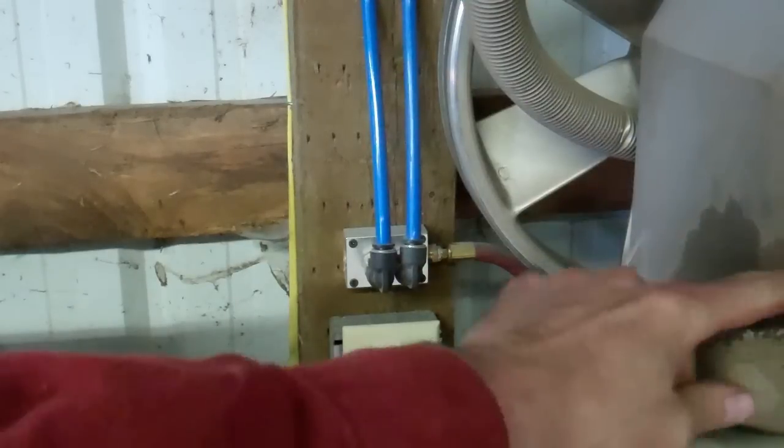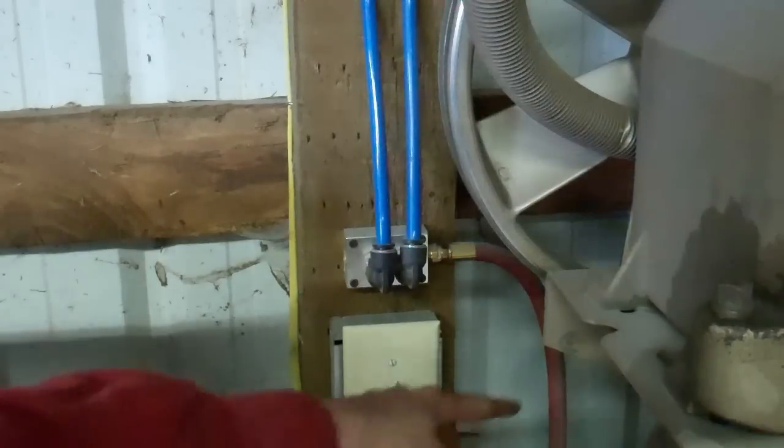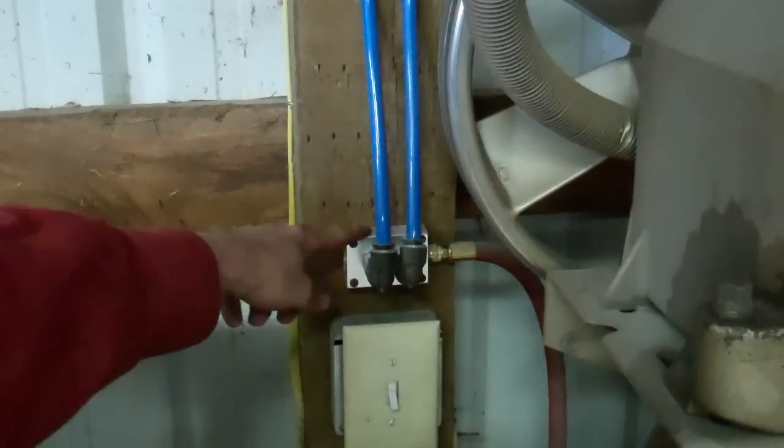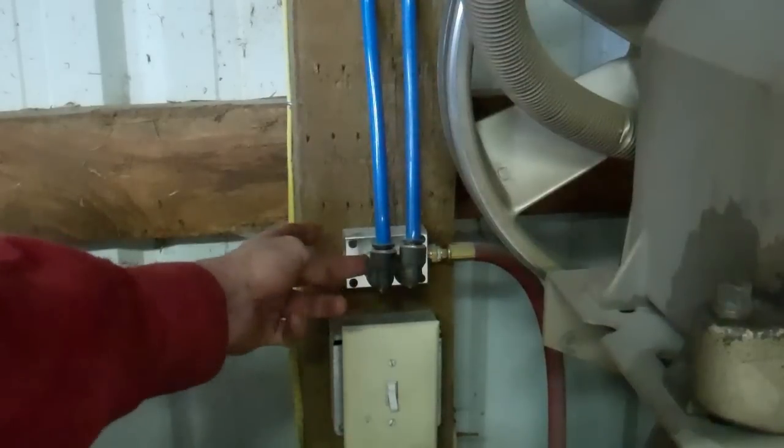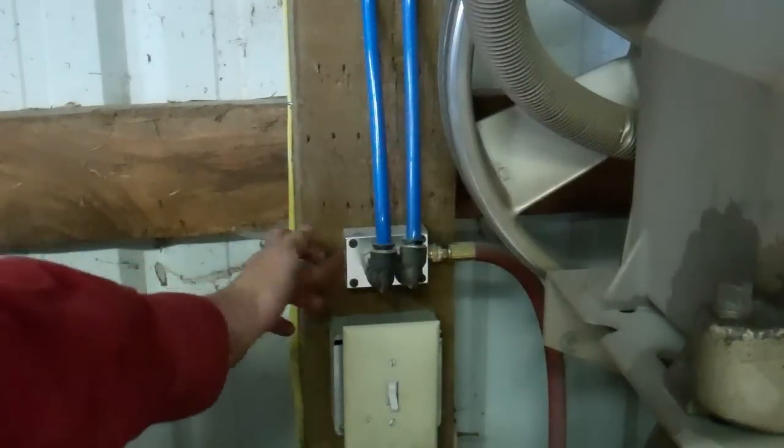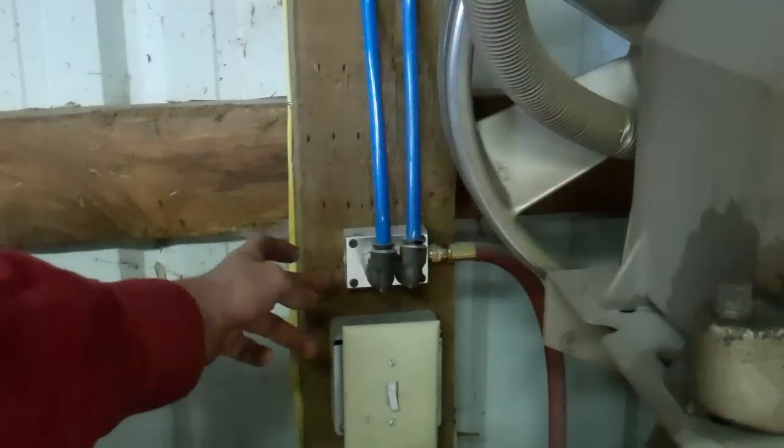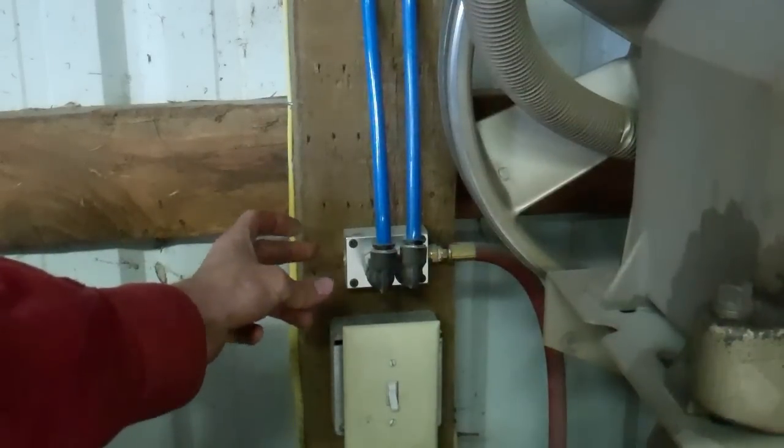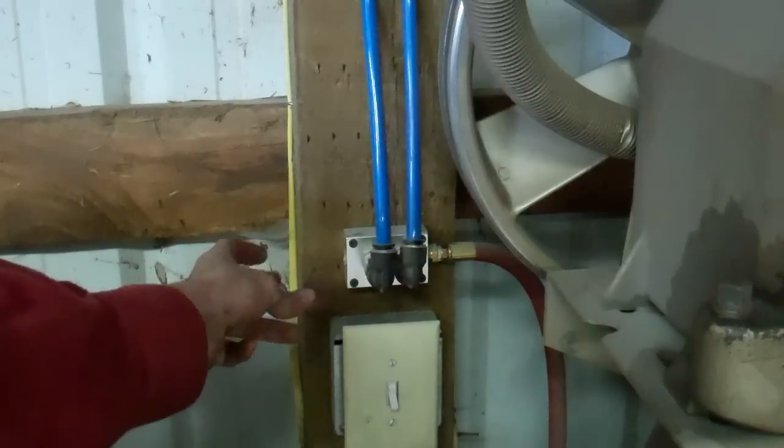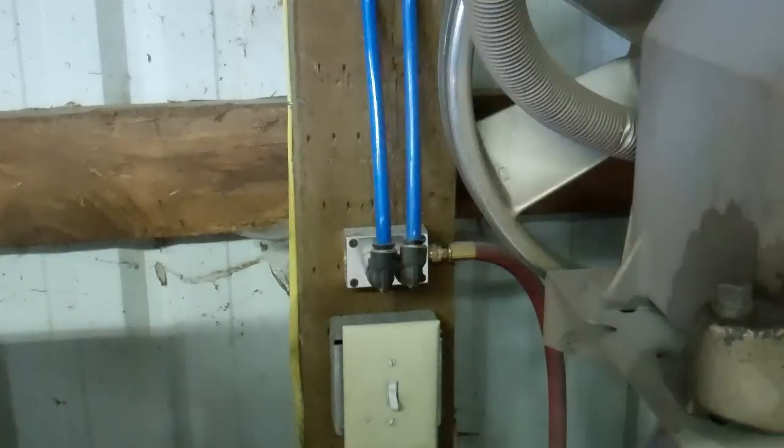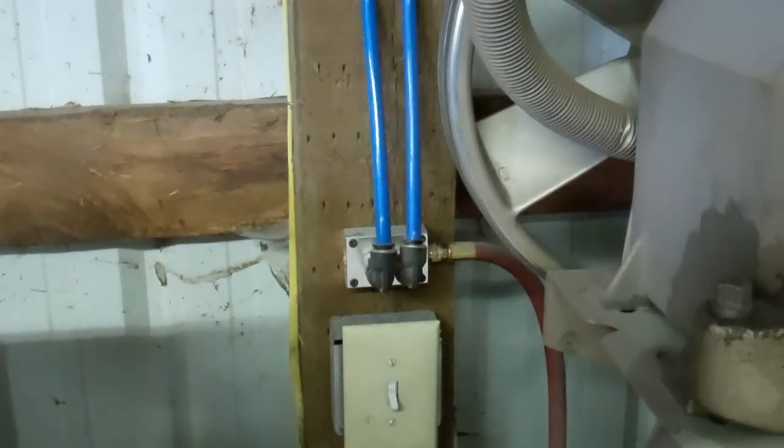As you can see I have my compressor right here and I have a soft flexible line that's going to come into this first manifold and it's got two outs. And there's a plug right here where I can also put an air chuck. So I can have a total of three air chucks with this system. It's really slick, really easy to install and really affordable.